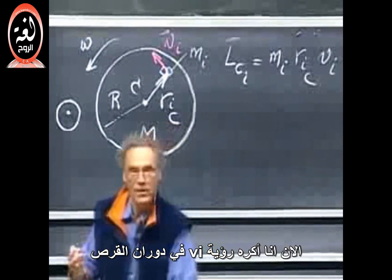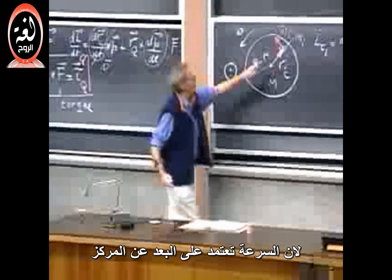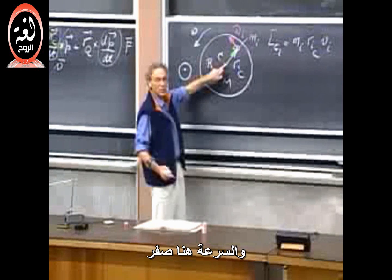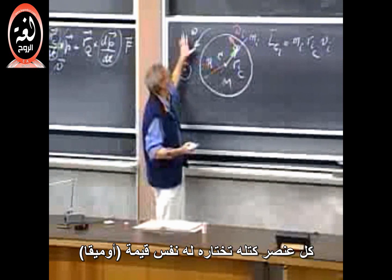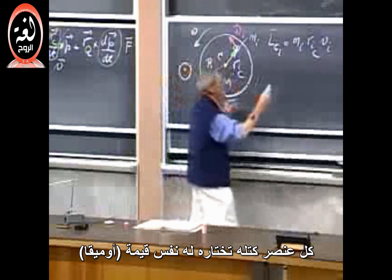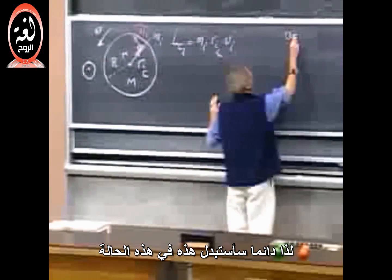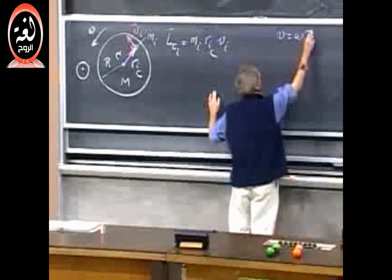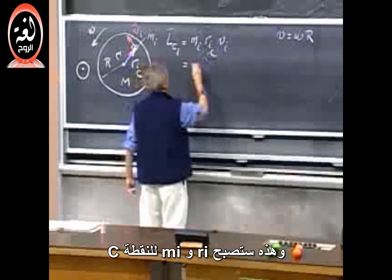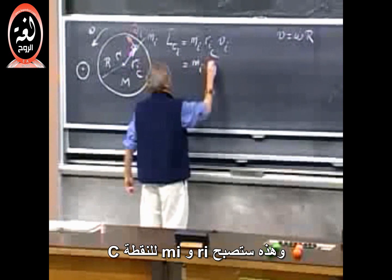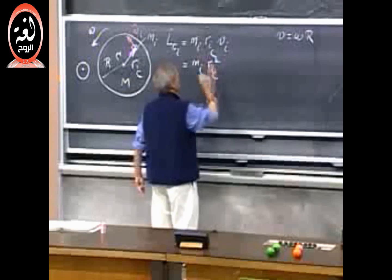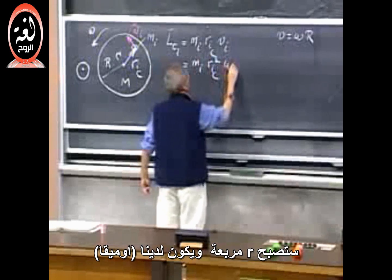Now, I hate to see a V of i in a rotating disk because the velocity will depend on how far you are away from the center. The velocity here is zero. However, they all have omega in common. Every single element that you choose has the same omega. So I'm always going to replace, in a case like this, V by omega R. And so this then becomes M of i, R of i of C, I get a square here and I get omega.